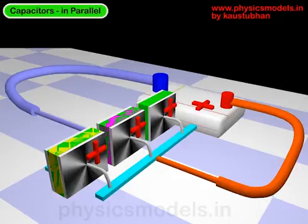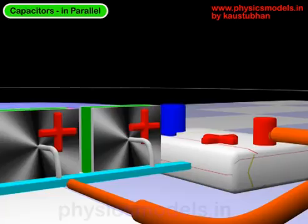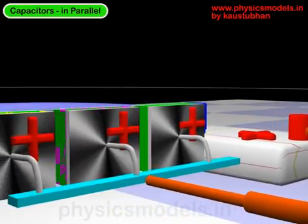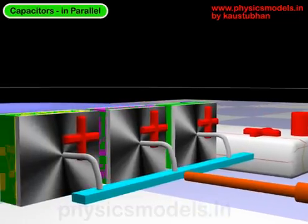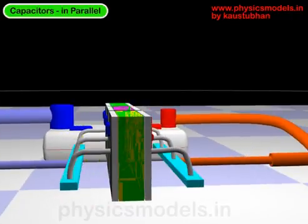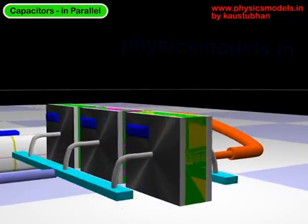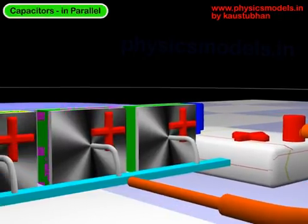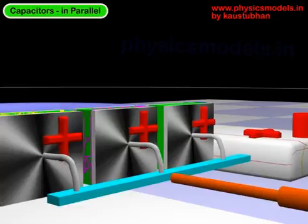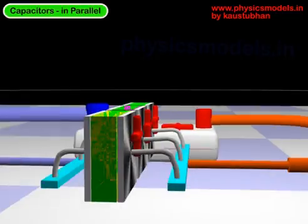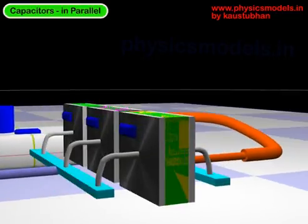Anything connected between these two turquoise blue bus bars will have the same potential difference. The battery itself has a potential difference between the positive and negative terminal. Because these three plates on the right-hand side have the same potential, and these three plates on the other side have the same potential as the negative side of the battery, the potential difference between the plus and minus side is the same for all three capacitors. That's the whole idea of a parallel system.